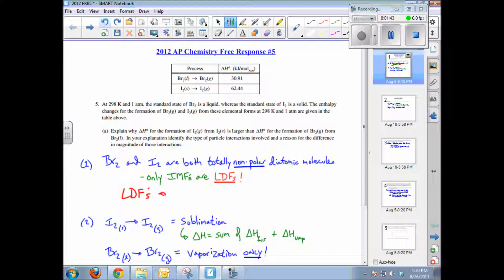So I think that's the best possible answer. Let's write it in red. LDFs are greater in iodine because larger, more electrons, and that's probably enough for the AP, but you also could write greater ease of polarizability.